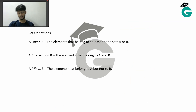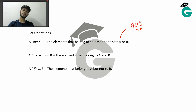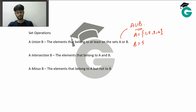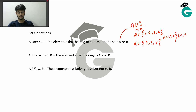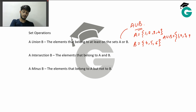Now let us move on to set operations. A union B means all elements that are either in A or in B. With A = {1, 2, 3, 4} and B = {4, 5, 6}: A union B = {1, 2, 3, 4, 5, 6}. The condition for an element to be in A union B is that it is in at least one of A or B — 4 is in both, so it is still included once.